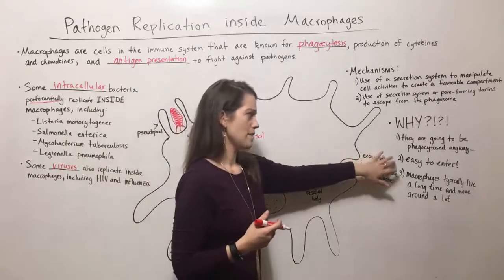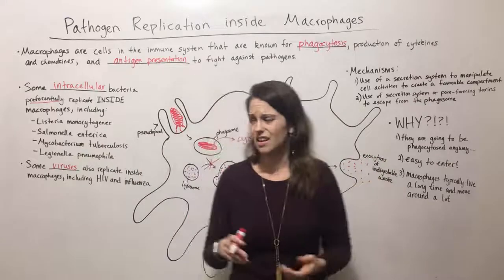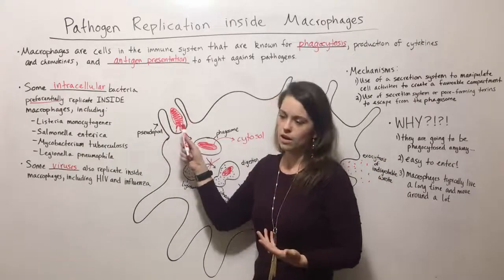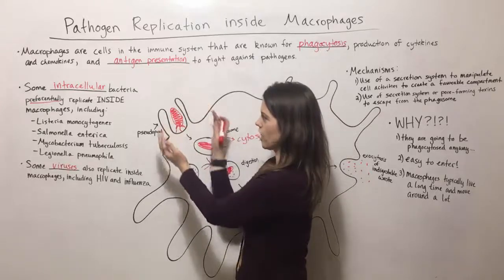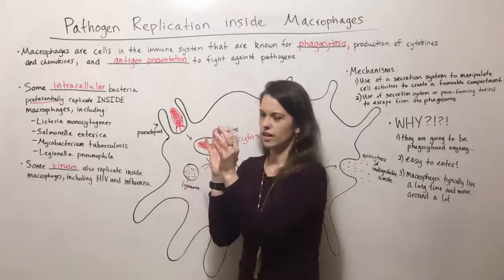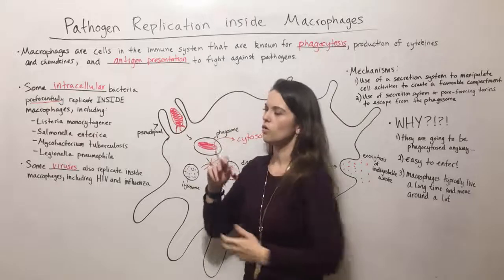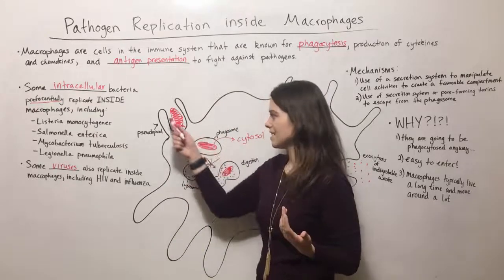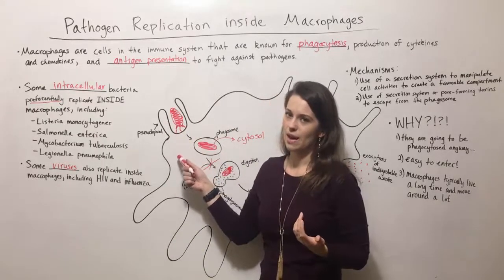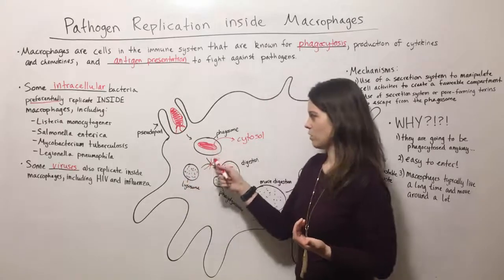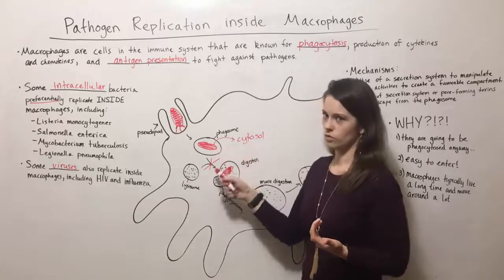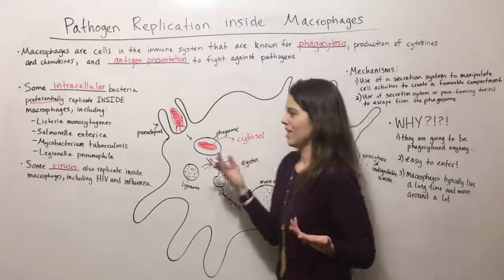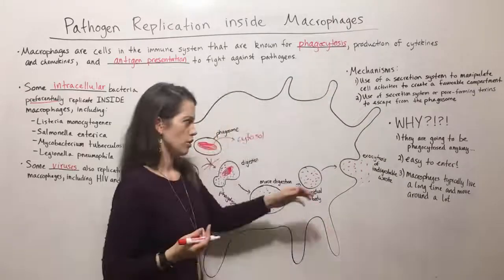Another possibility is that macrophages are just easy to enter. These pseudopods — or pseudopodia — are sort of feet-like projections, almost like little fingers that will engulf anything foreign. It's so easy to get inside, and as long as the pathogen can find a way to divert these activities so that it can still replicate, it's good to go. So that's another possibility.